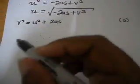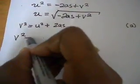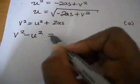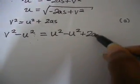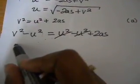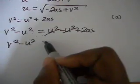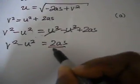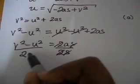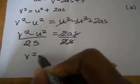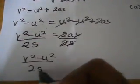Now we want to find a. We subtract v squared and subtract u squared — wait, we take v squared minus u squared equals 2as. Then we divide both sides by 2s, and we get a equals v squared minus u squared over 2s.